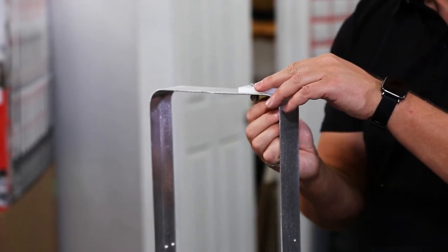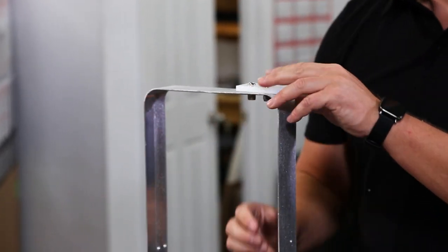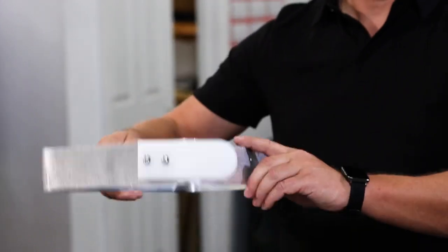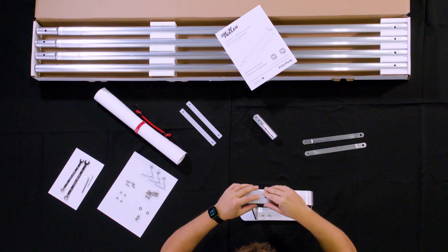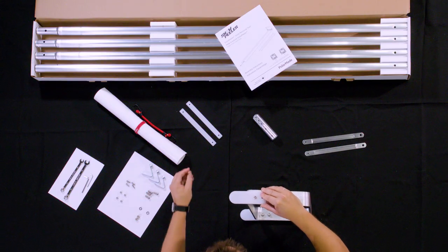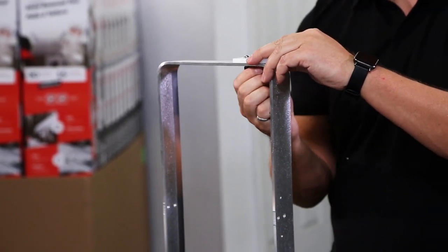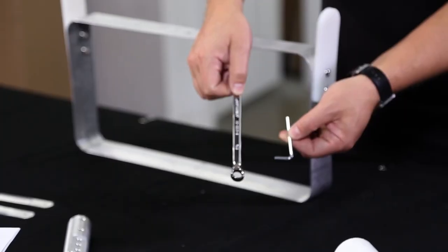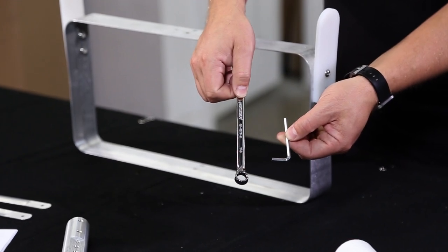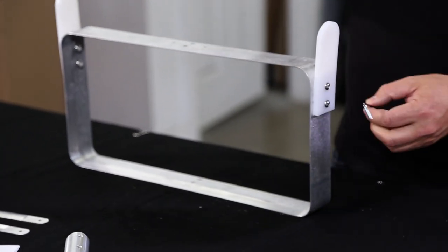Secure the lock nuts and hand tighten. Now flip the cutting frame and install the second glide pad. When tightening ensure that the pad is aligned with the vertical edge of the cutting frame. To finish tightening the screws and lock nuts use the 5/32 inch hex key and the wrench.